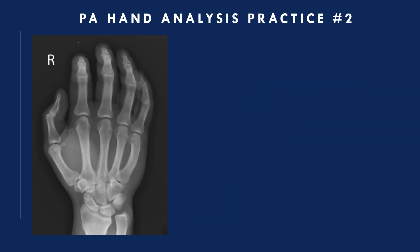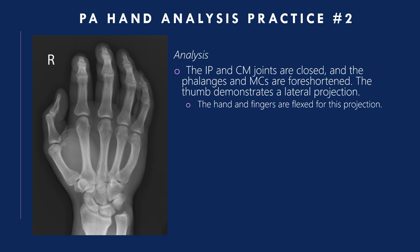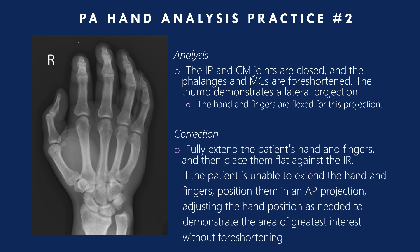PA hand analysis practice two: the IP and CM joints are closed and the phalanges and metacarpals are foreshortened. The thumb demonstrates a lateral projection — the hand and fingers were flexed. Correction: fully extend the patient's hand and fingers and place them against the IR. If unable, position them in an AP, adjusting hand position as needed to demonstrate the area of greatest interest without foreshortening.